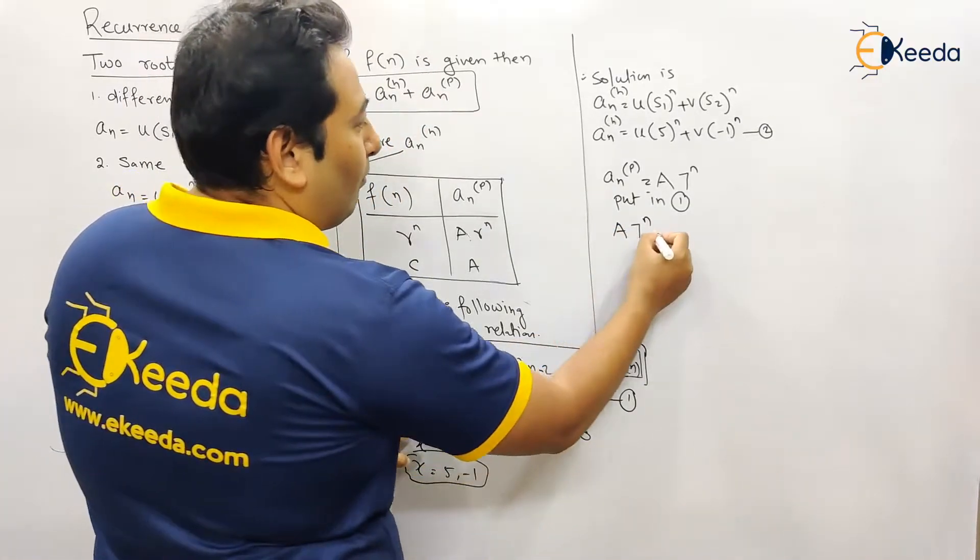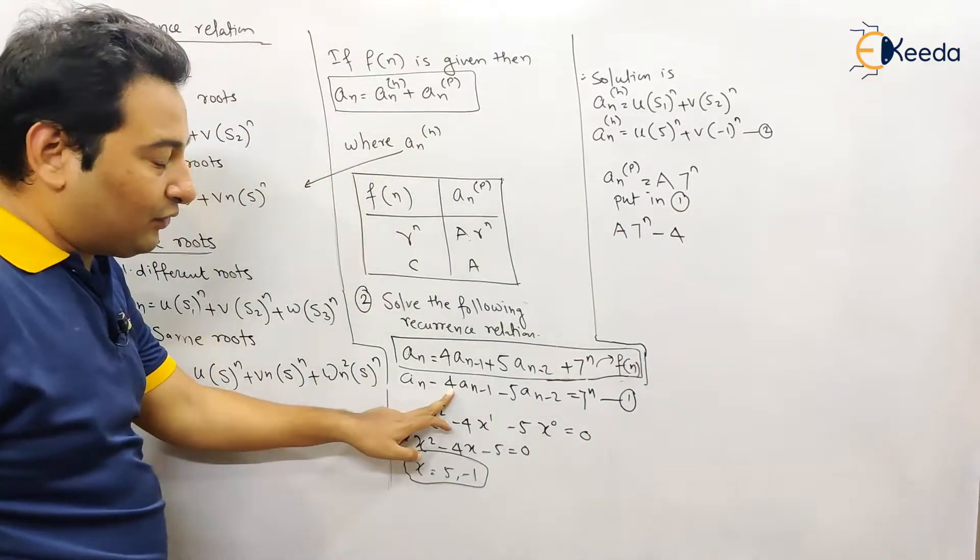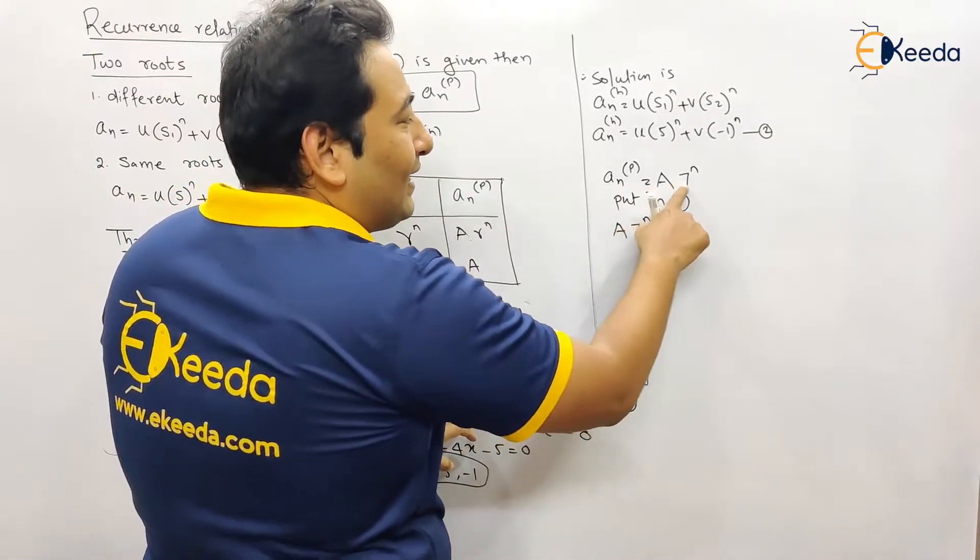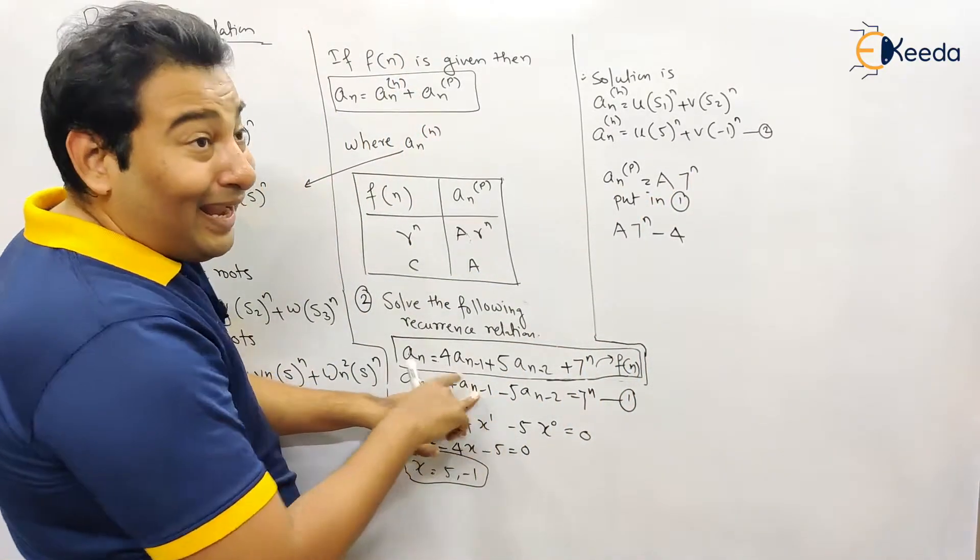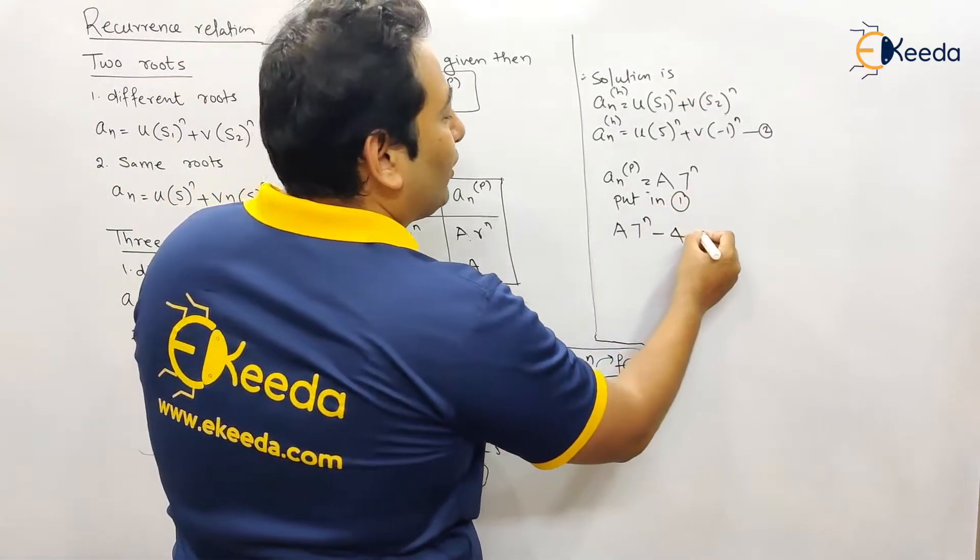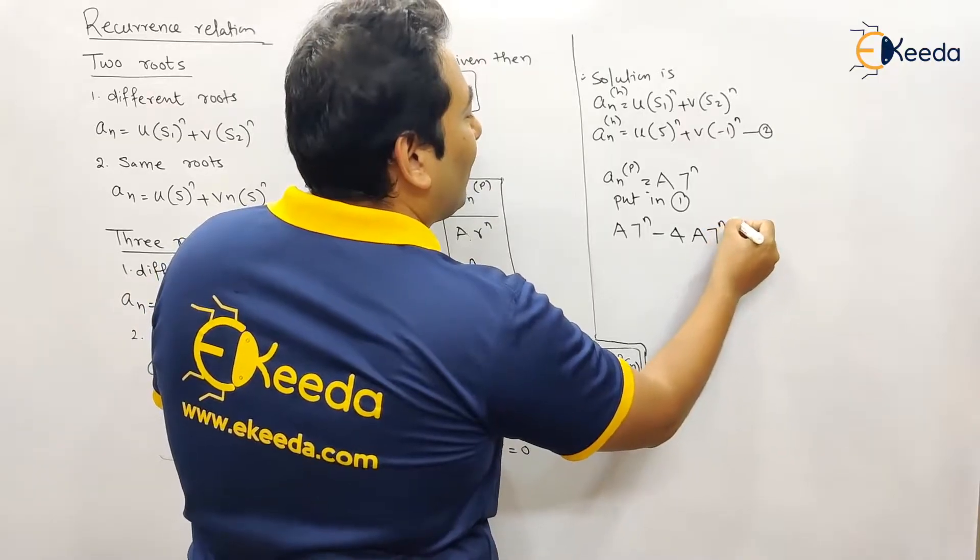What else? Minus four. See this minus four a of n minus one. a_n is a·seven raised to n, but here it is n minus one. That means we need to replace n with n minus one. So this will become a·seven raised to n minus one.